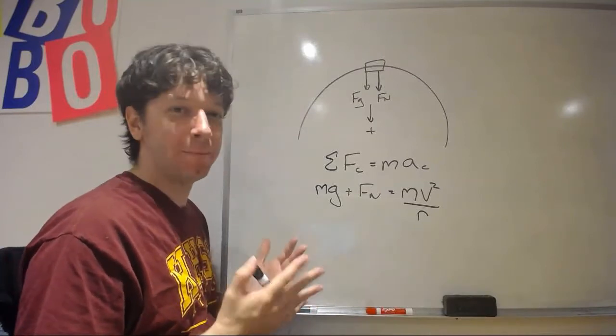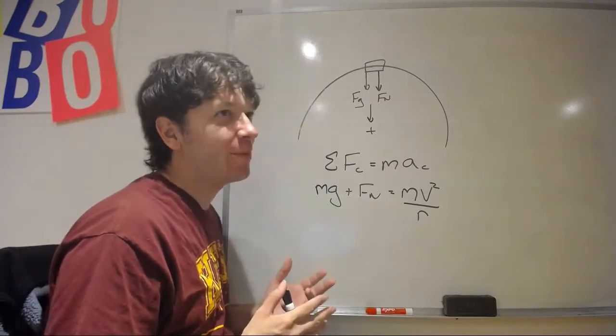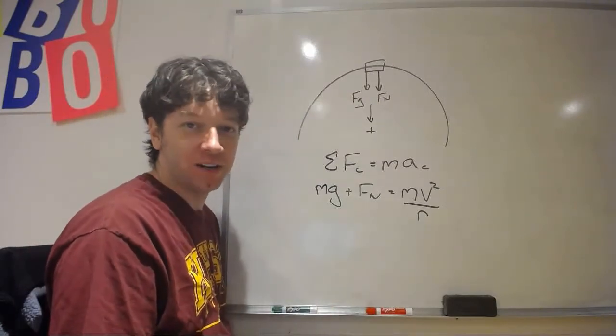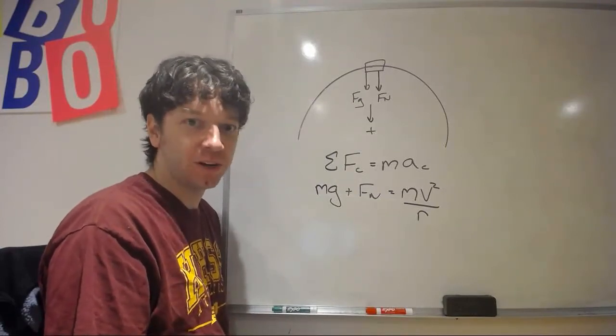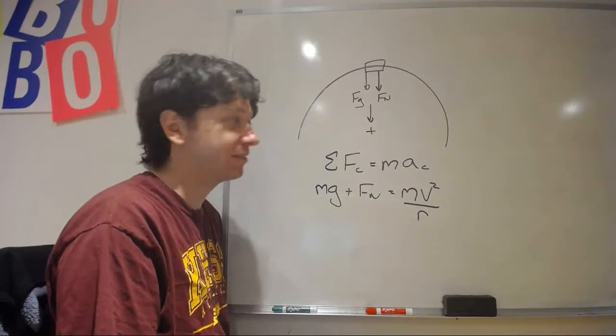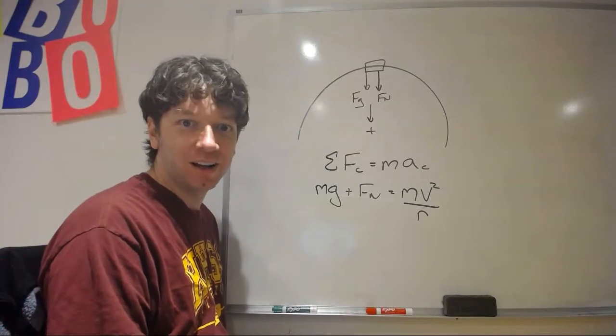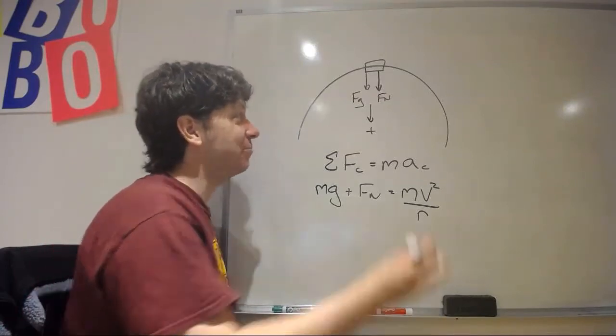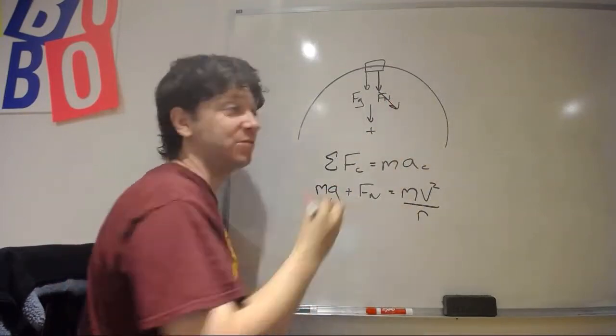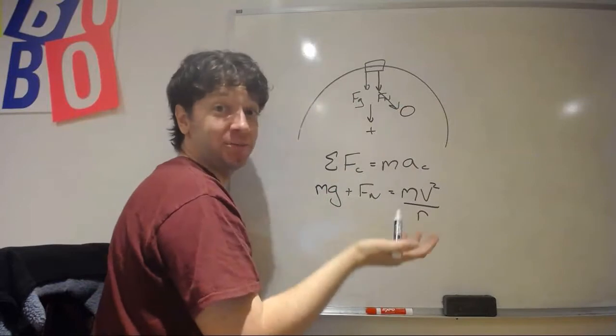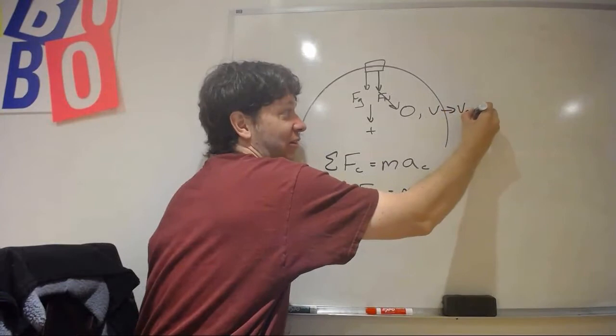Now, we want to know the minimum speed. Well, what happens if we go a little bit slower than the minimum speed? If we go slower than the minimum speed, we fall, don't we? We're no longer attached to the track. And, if we don't have safety harnesses, we're no longer attached to the cart. So, at that point, there's no more normal force. So, the normal force is going to go to zero at the limit where our velocity approaches our minimum velocity.